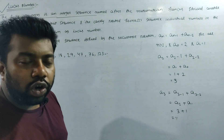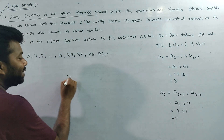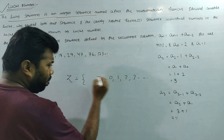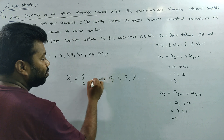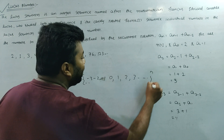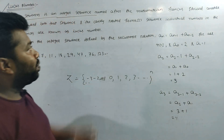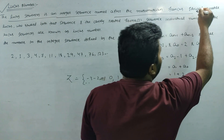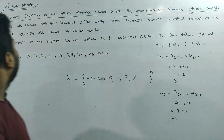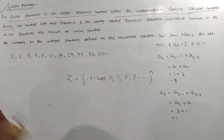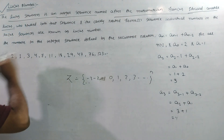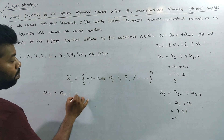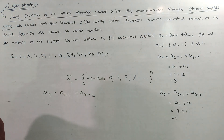We have 0, 1, 2, 3 — positive integers. We also have minus 1, minus 2, minus 3 — all the integers. This Lucas sequence is an integer sequence named after the mathematician. Look at the sequence: an is equal to an minus 1 plus an minus 2. This is the Lucas sequence.